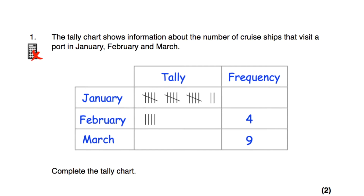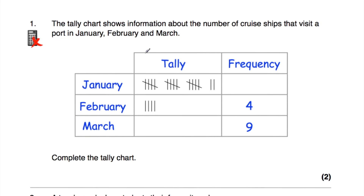Question number one. The tally chart shows some information about the number of cruise ships that visit a port in January, February and March. We've got a column for tally and a column for frequency. We've got rows for January, February, and March. February's been completed at four — there are four tally marks and the frequency is four. We've got to fill in the frequency for January and the tally for March, because the question says complete the tally chart.